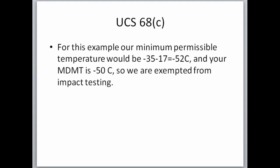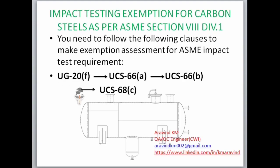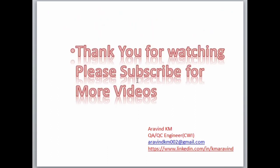In summary, to assess whether a material is exempted from impact testing, we must go through UG20F, UCS66A, UCS66B, and UCS68C in sequence. I hope this video was clear. Thank you for watching — please subscribe to this channel for more videos.